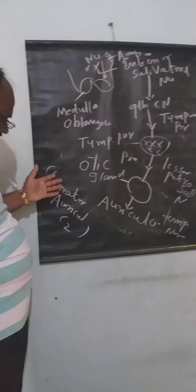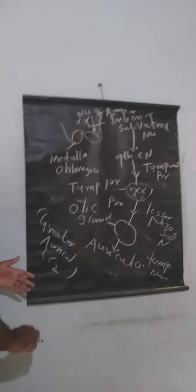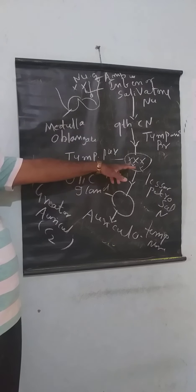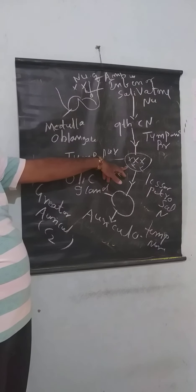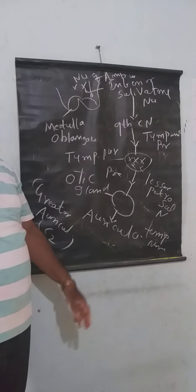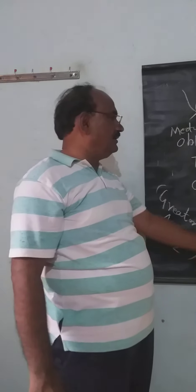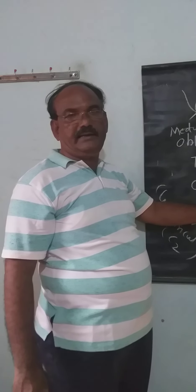The sensory supply is from the greater auricular nerve from C2, the second cervical nerve. Regarding nerve supply, the otic ganglion is very important when studying the parotid gland - if you ignore the otic ganglion, your study becomes incomplete. In summary: the ninth cranial nerve gives the tympanic branch, which gives the lesser petrosal nerve, which opens into the otic ganglion, which relays via the auriculotemporal nerve. Sensory supply is from the greater auricular nerve.